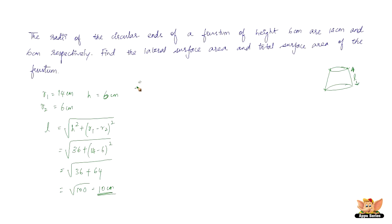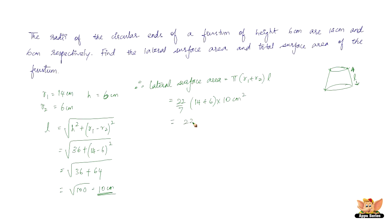Now we can find the lateral surface area, given by π × (r1 + r2) × l. Substituting: (22/7) × (14 + 6) × 10 = (22/7) × 20 × 10 = (22/7) × 200. Solving this, we get 628.57 cm². Therefore, the lateral surface area of the given frustum is 628.57 cm².